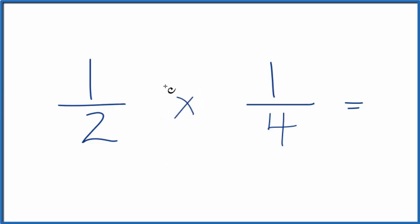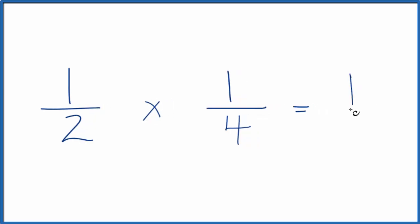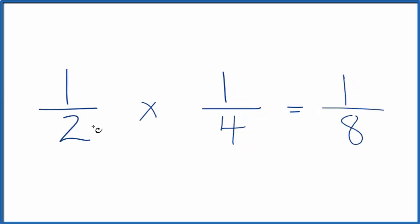That way, one times one, that's one, and then two times four, that's eight. So one-half of one-fourth equals one-eighth.